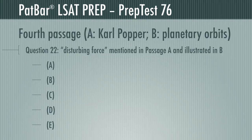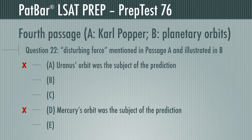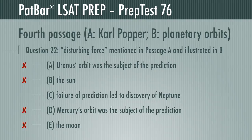Question 22 wants you to find in Passage B that which illustrates a disturbing force as mentioned in A. A disturbing force would disturb a theory's predictions and need to be accounted for to correct them. It can't be Uranus — that was the first of the two planets mentioned, so it cannot disturb itself. It can't be Mercury, the second example. It can't be the Sun or the Moon — both are known quantities and would have been included in any calculations where appropriate. Passage B specifically mentions that it was the failure of the predicted orbit that led to the discovery of Neptune, which was the disturbing force needed to bring the calculations into alignment. C is correct.